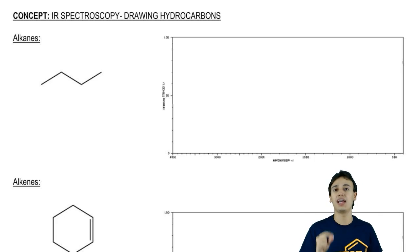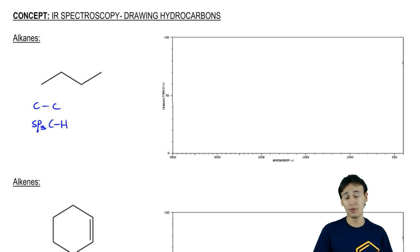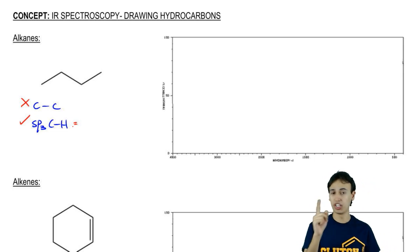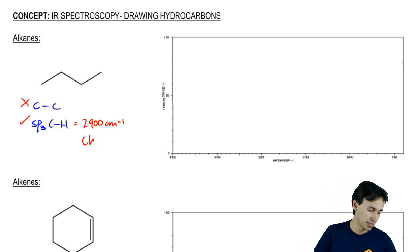We said that in a normal alkane, how many different types of bonds are there? Well, there's two. There's a C-C bond and there's an SP3-CH bond. How many of these do we actually draw? Just the second one. We're only going to draw the SP3-CH. Just so you guys know, SP3-CH, we know one thing about them. They result around 2900, but what is their shape? Their shape is called choppy.